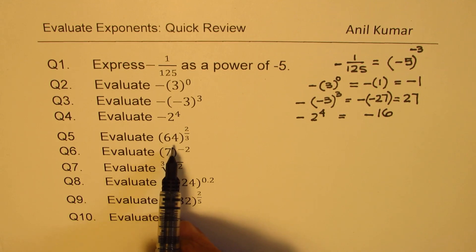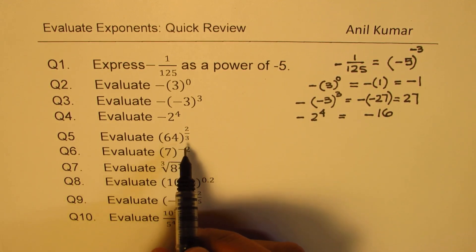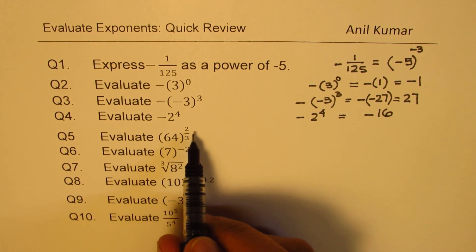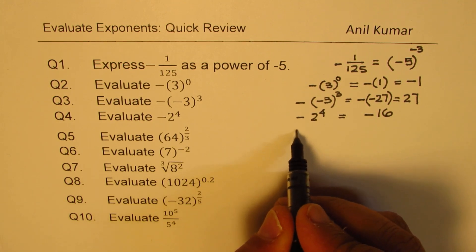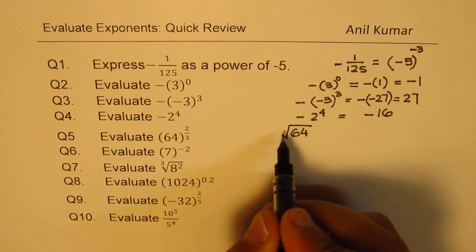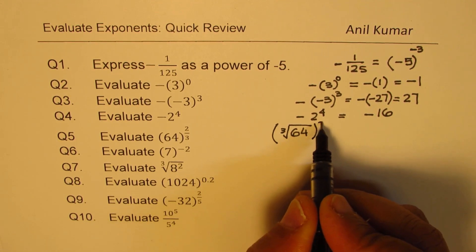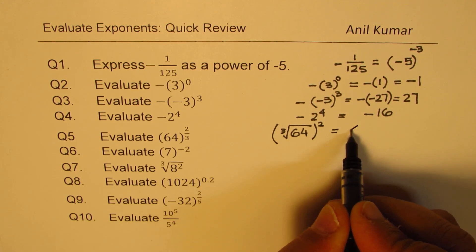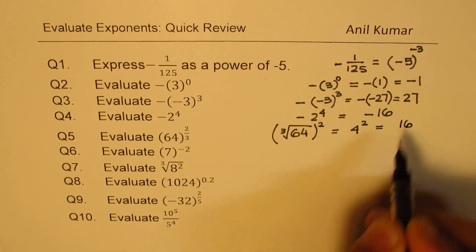Here we have 64 to the power of 2 over 3. That basically means you have to find the cube root first and then square it. So 64 cube root, and then you square it. Now cube root of 64 is 4. So we get 4 squared here. That gives you 16 as your answer.